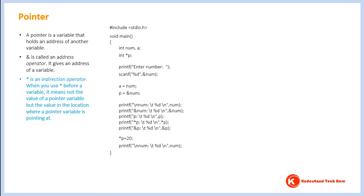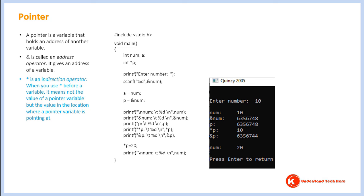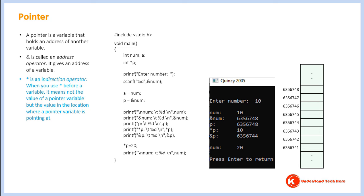This is the output of the program. I have used a simple program called Quincy 2005 to write, compile, and execute this program. This is a memory diagram along with the addresses of locations in memory. Let's go through the program. This is a declaration of a normal variable — as explained earlier, when we declare a variable, some location in memory will be reserved. The name of this location will be 'num'.